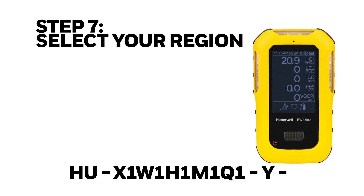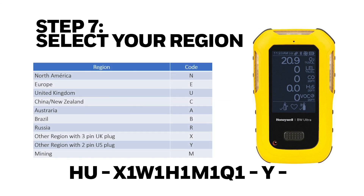Step 7: select your region. The last step is to select the region where we are going to use the unit. This is very important because when we send you the unit we also need to send you the plug that you connect to the wall to charge the unit. Depending on where you are located in the world the plug might be different, so we need you to specify this in order to know which type of plug to send you. In this case I am going to use this unit in North America, so my code will be N.